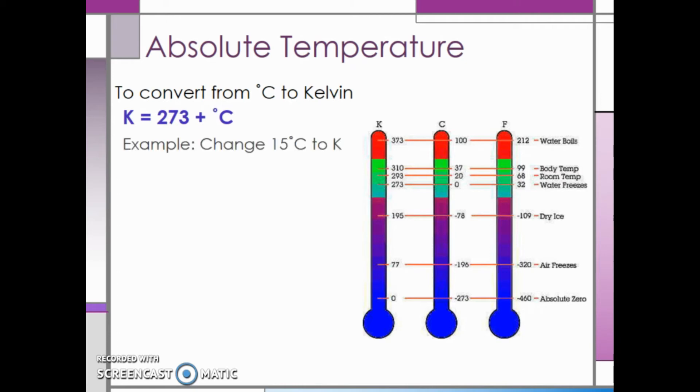As an example, if we want to change 15 degrees Celsius to Kelvin, we have to take the constant, 273, and add 15. This tells us that 15 degrees Celsius is equal to 288 Kelvin.